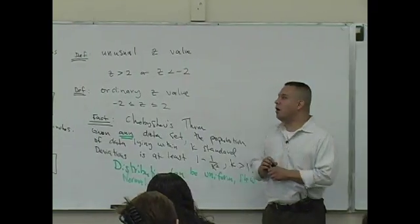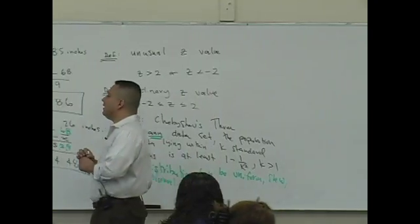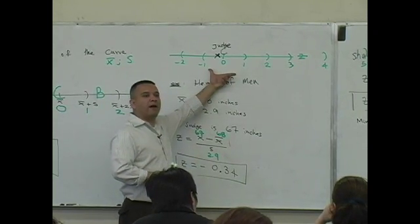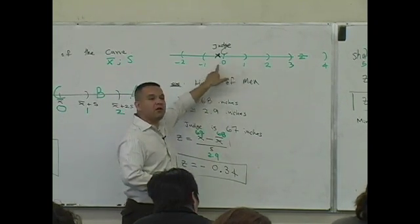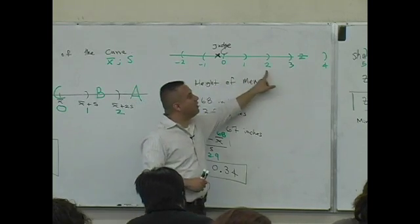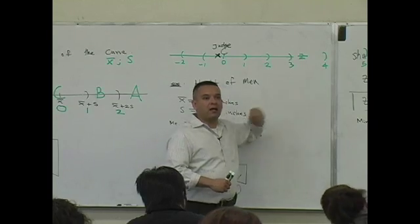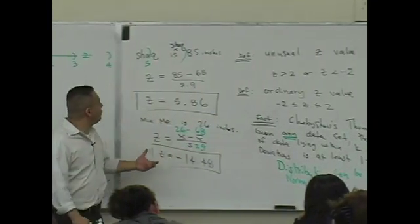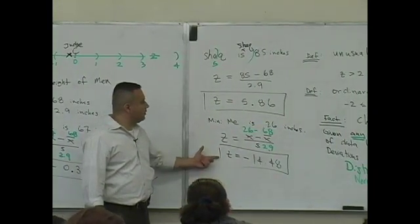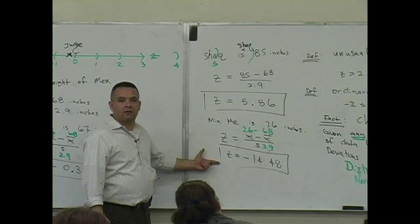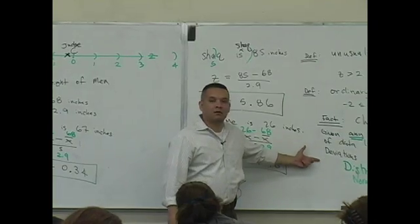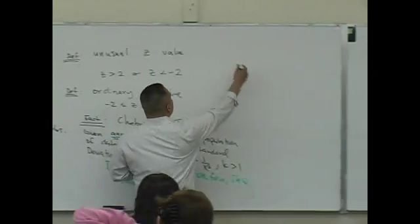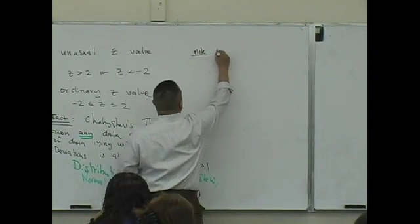What happens is people kind of want to know — even in the setting of heights — what percent of the population is within one standard deviation, two standard deviations, or three standard deviations? We can deduce what percent of the population is in the range between, say, Shaq and Mini-me. So if I look at this and use this theorem, if K is two, what do you guys get?